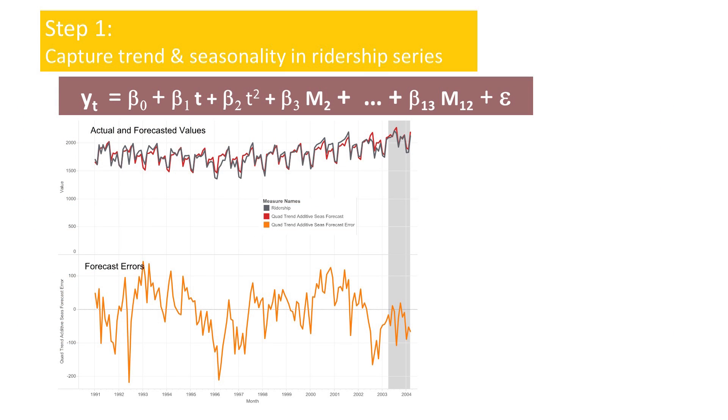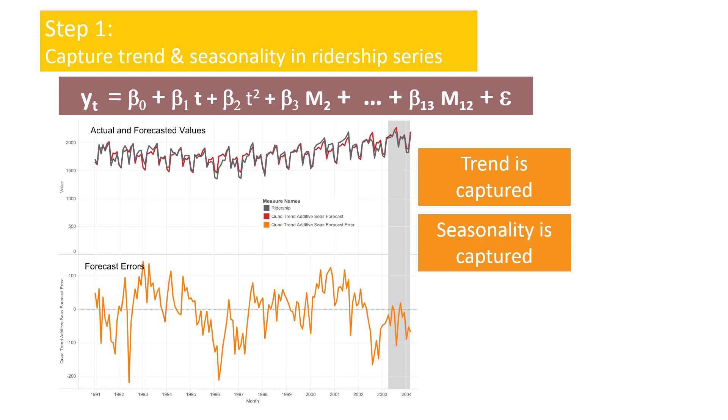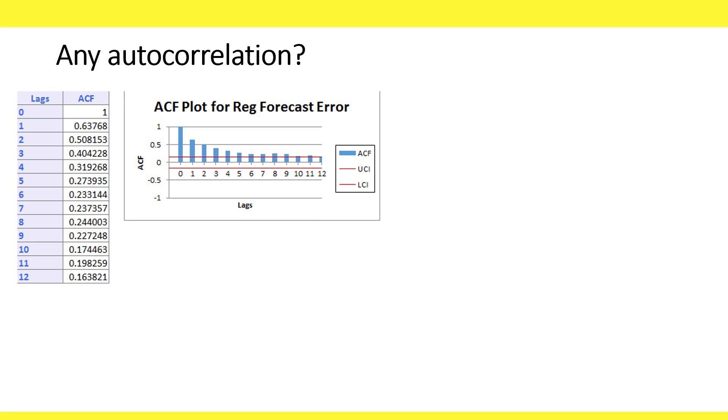Let's return to the Amtrak ridership example that we examined in the last videos. We fitted a linear regression model that captured trend and seasonality. And now we can use the model to compute one-step-ahead forecasts for April 2003. This is the first period in the validation period. The forecast is nearly 2,115,000 passengers. That's around 2.1 million passengers in that month. To see if we can improve this forecast, let's check if there's any autocorrelation left. From an ACF plot, an autocorrelation plot, we see that indeed there is autocorrelation at multiple lags. So there's a chance we can improve our forecasts further.